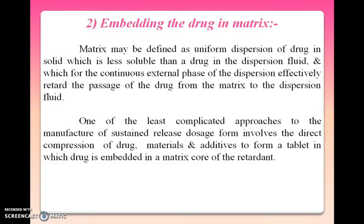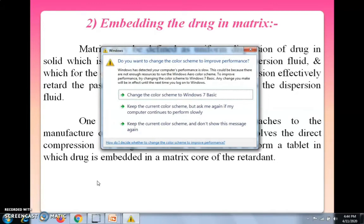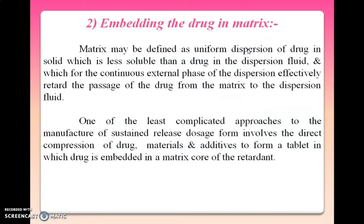The second approach is embedding or entrapping the drug in a polymer matrix. A matrix may be defined as a uniform dispersion of drug in a solid which is less soluble than the drug in the dispersion fluid, forms the continuous external phase of the dispersion, and effectively retards or slows down the passage of drug from the matrix to the dispersion fluid. One of the simplest approaches to manufacture sustained release dosage forms is direct compression of drug, polymer, and additives directly compressed into a tablet.